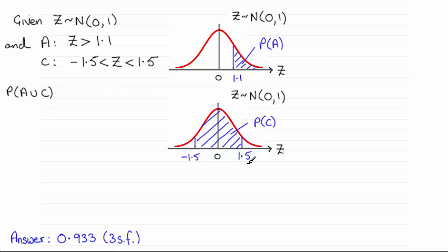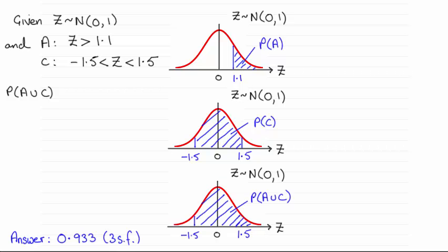So if we're looking for the probability of A union C, we want either A to happen or C to happen or both. And the only conclusion we can get for that situation to happen is that you've got to be greater than minus 1.5.